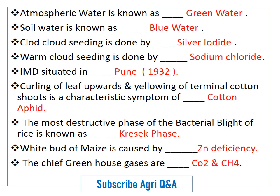The most destructive phase of bacterial blight of rice is known as the kresek phase. White bud of maize is caused by zinc deficiency.